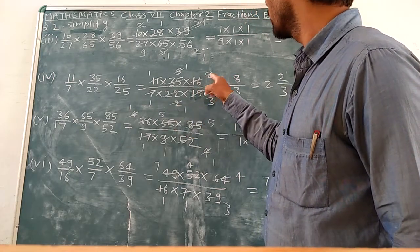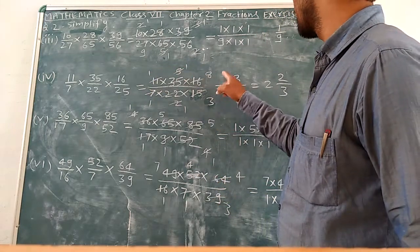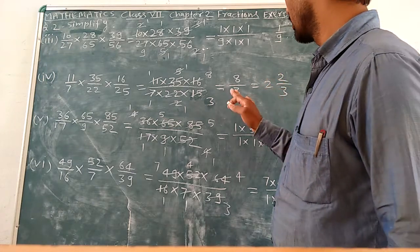5 upon 15. 2 upon 2, 2 upon 6. Numerator 1 multiply 8. Clear?